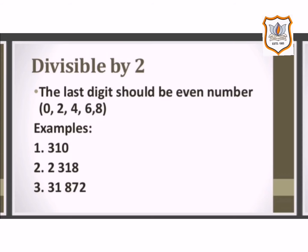For example, in 310, 2318, and 31872, the digits at the units place are 0, 8, and 2.